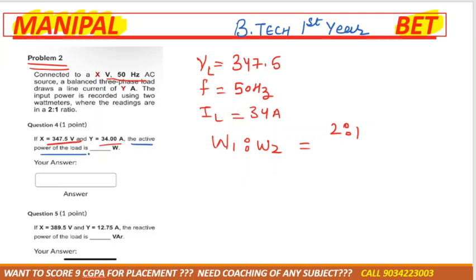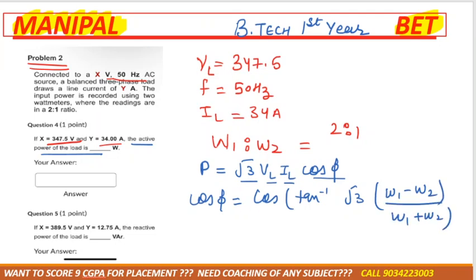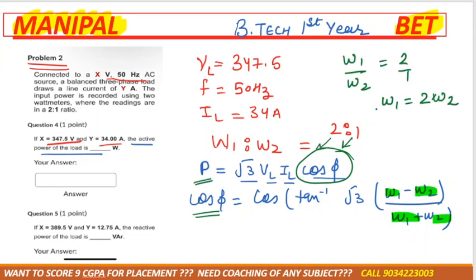We need to calculate the active power of the load. The power formula is root 3 × VL × IL × cos φ. We have VL and IL but we don't have cos φ. The cos φ formula is cos(tan⁻¹(root 3 × (W1 - W2) / (W1 + W2))). Since we have the W1 to W2 ratio, we can substitute it to find cos φ and then the active power.